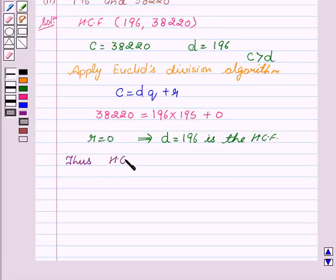Thus, HCF of 196 and 38,220 is 196. So hope you understood the solution. I enjoyed the session. Goodbye and take care. Thank you.